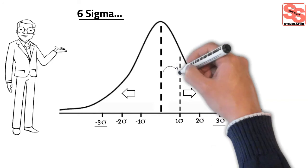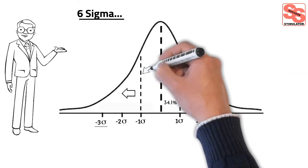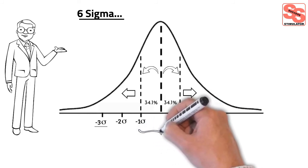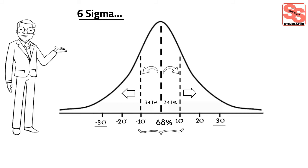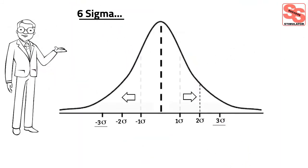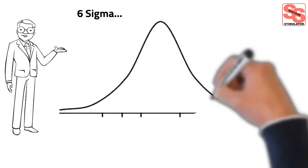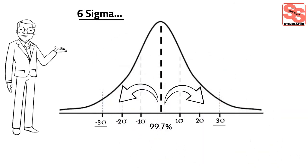Moving 1 standard deviation away from 0 — the graph center — covers about 34.1% of the data. Moving 1 standard deviation in another direction covers a total of 2 sigma, therefore covering 68.2% of the data. Similarly, 2 standard deviations in either direction covers 4 sigma, or 95.4% of the data. And 3 standard deviations in either direction covers 6 sigma — roughly 99.7% of the data falls within the margin.